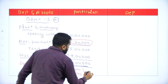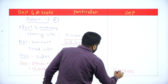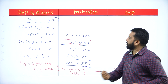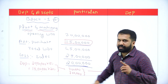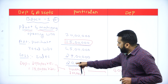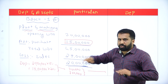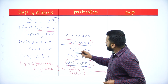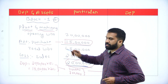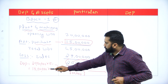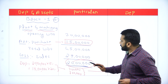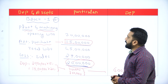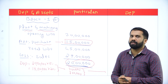Total depreciation for Block 1 is 6 lakh. The reason we calculated depreciation twice is because it is plant and machinery — first normal depreciation on the closing WDV, then additional 20 percent depreciation on the new purchase of 15 lakh. So 3 plus 3 equals 6 lakh.